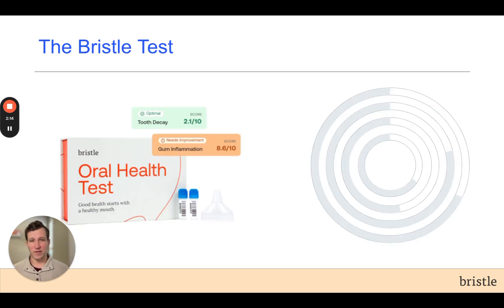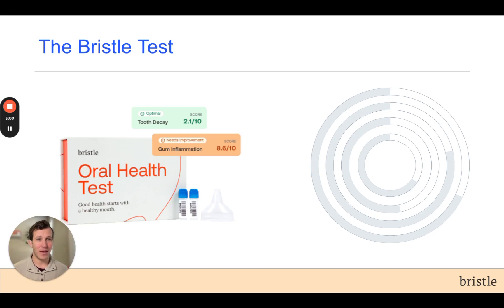The Bristle test identifies and measures all of the bacteria and fungi found in saliva. Through our research, we've identified which bacteria contribute to conditions like bad breath, gum inflammation, and tooth decay, and importantly, which are beneficial to our health. By measuring the amount of bacteria related to each condition, we can give you and your care team insight into how these species may be affecting your oral and overall health.